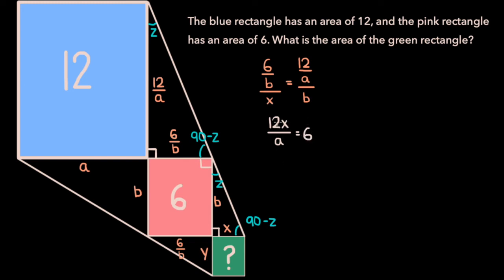Now to isolate x, we're going to multiply both sides of this equation by a, and divide both sides by 12. And if we do that, we're left with x is equal to 6a over 12, which simplifies to a over 2.